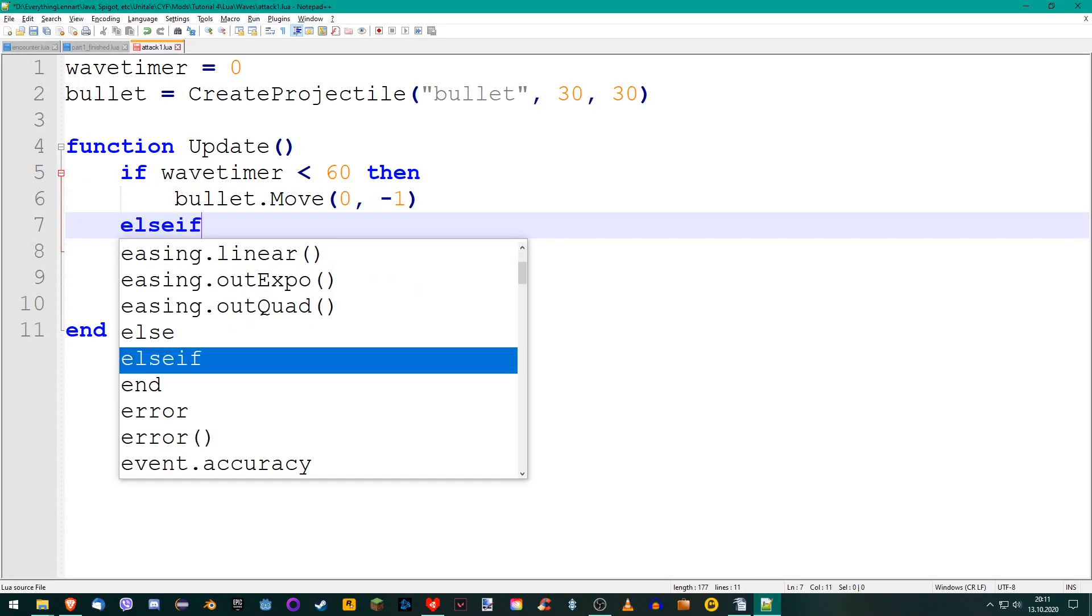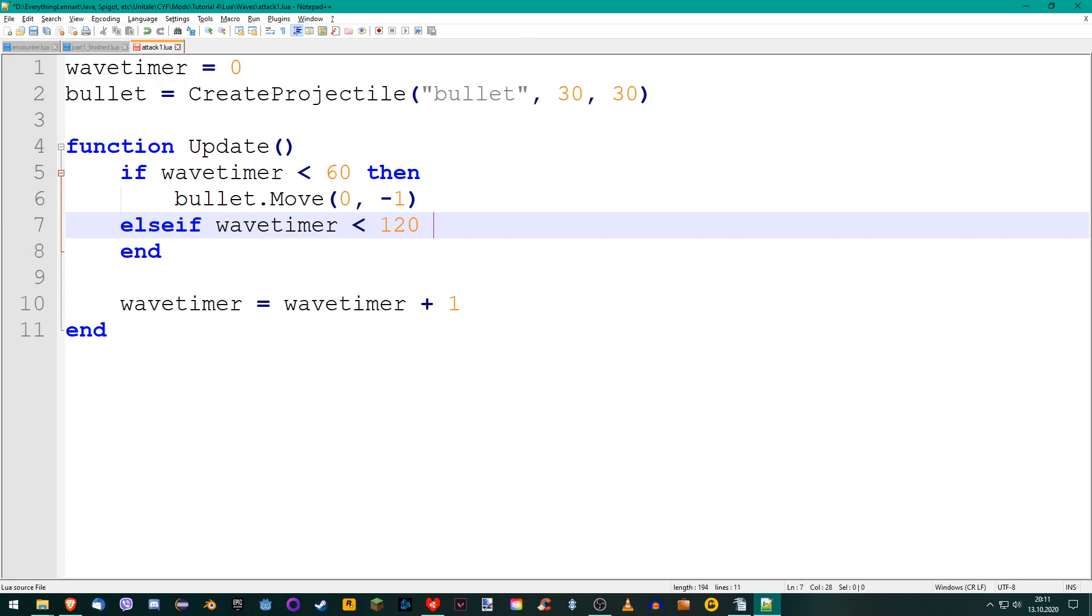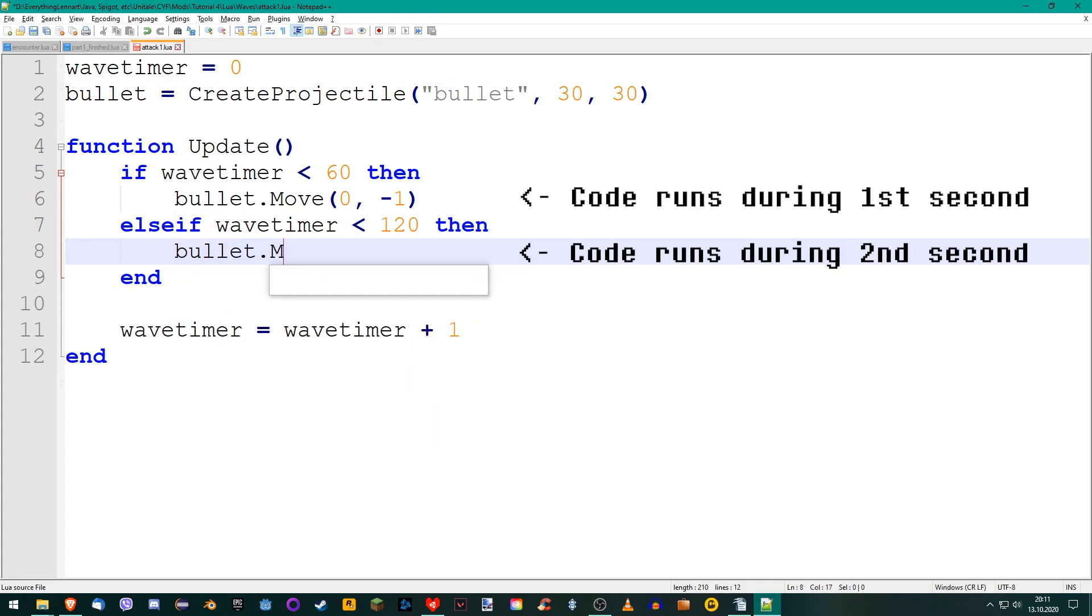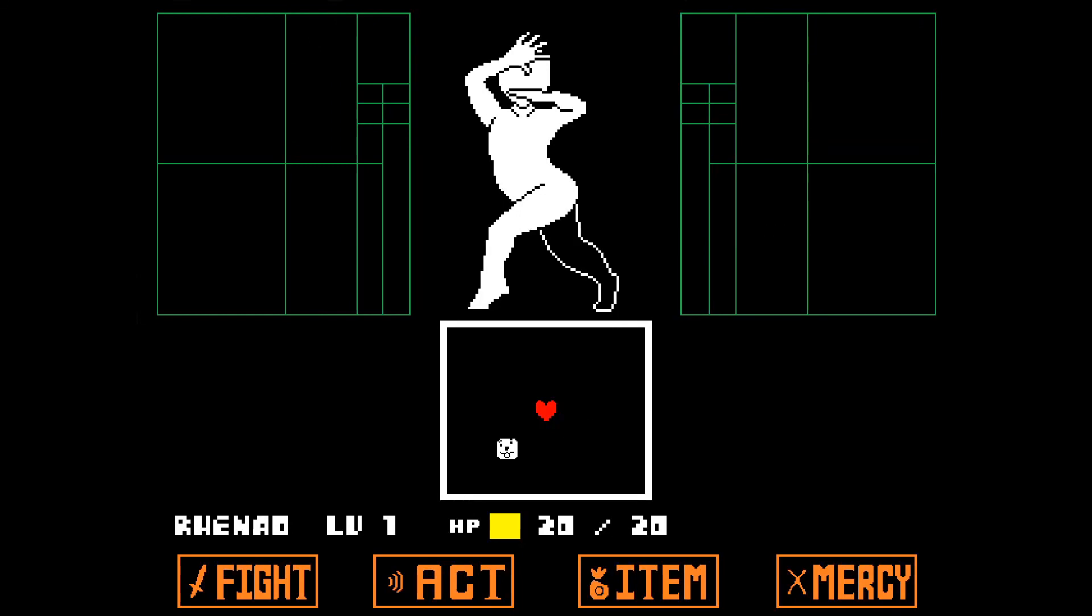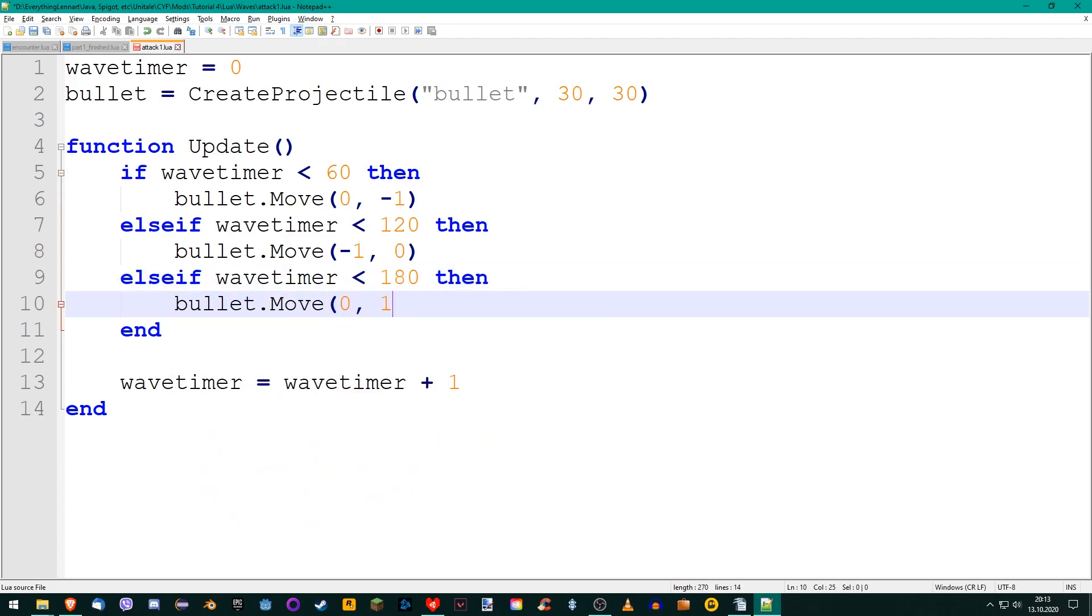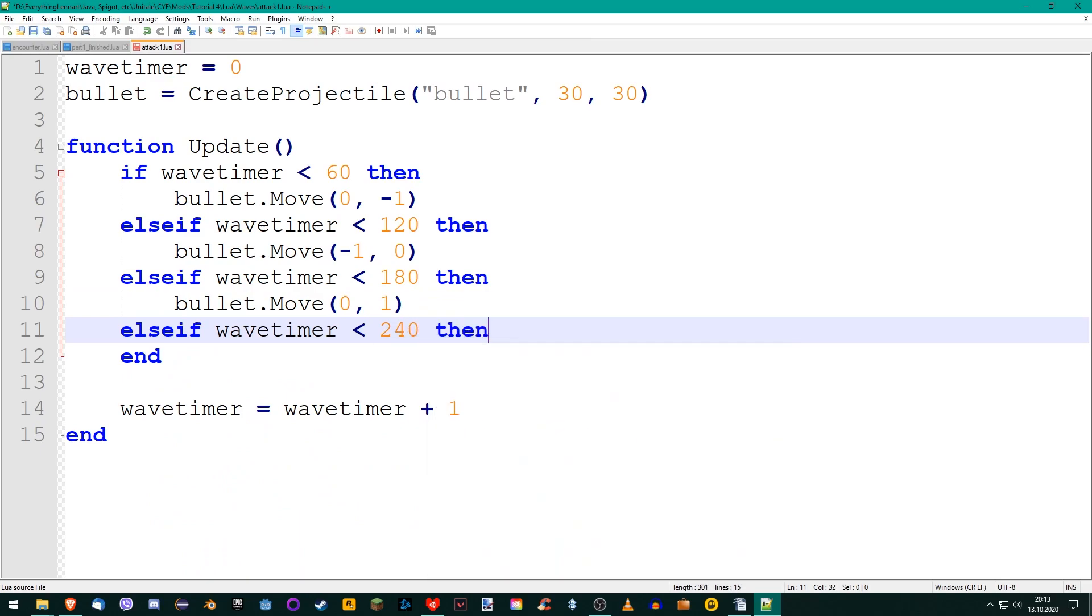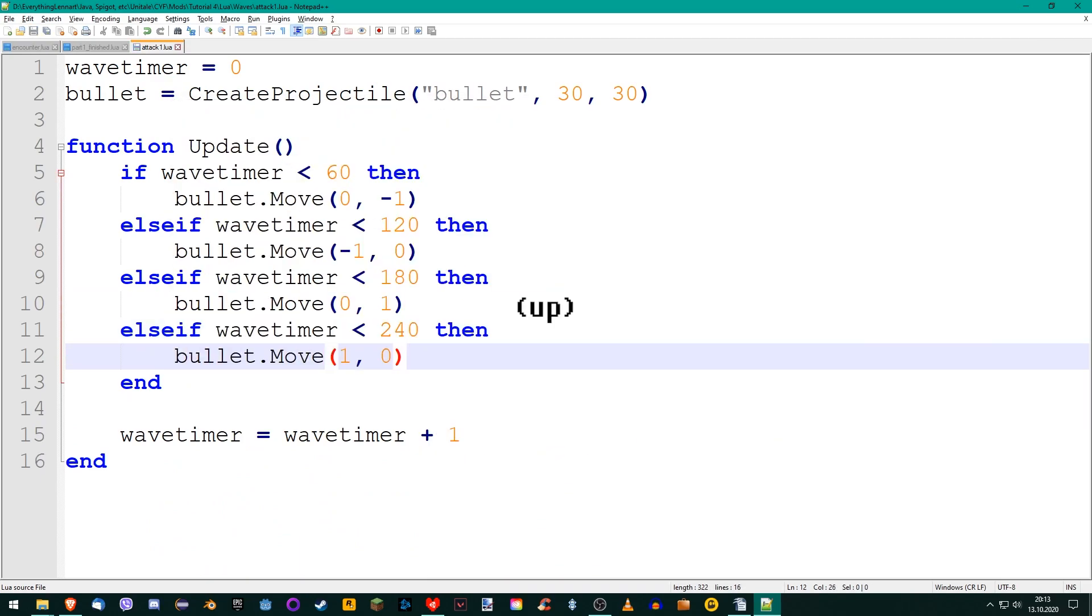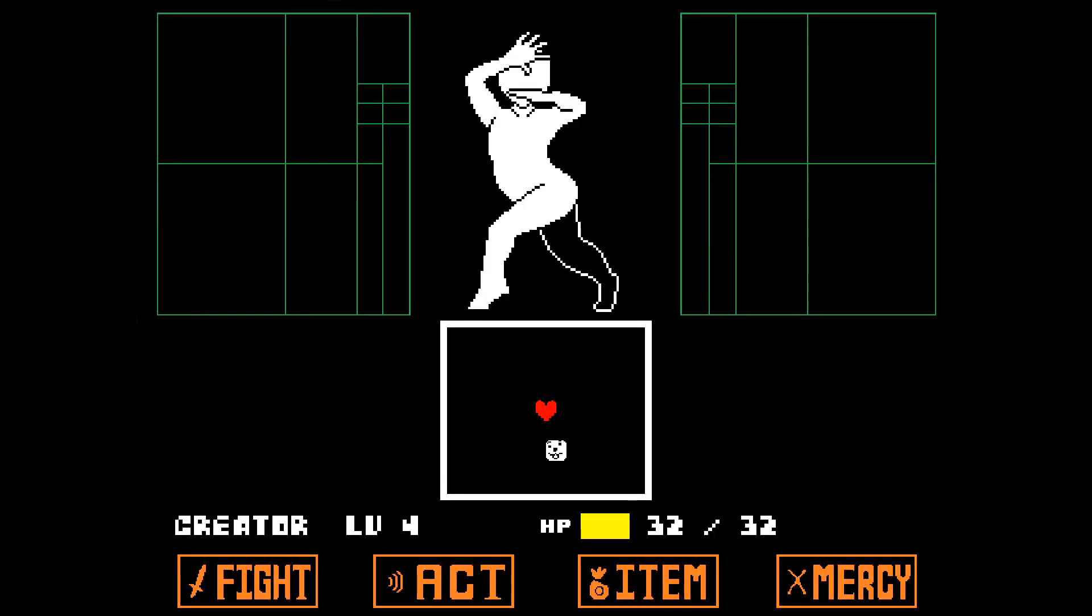Next, create an if-else statement. Check if the wavetimer is smaller than 120, and if so, move the bullet to the left. This if-else statement is connected to the if statement above and will only run if the wavetimer is smaller than 120, so if the wave has been active for less than two seconds. But because the first if statement is true for the first second of the wave, the code inside of this if-else statement will only run during the second second of the wave. Finally, add two more if-else statements. Check once for wavetimer smaller than 180, and the other time for wavetimer smaller than 240. Move the bullet up and right respectively. And there we have it, our final bullet movement.